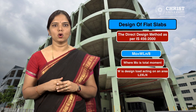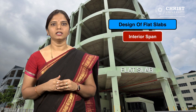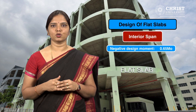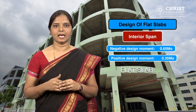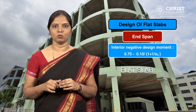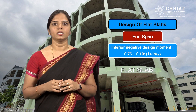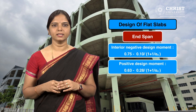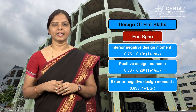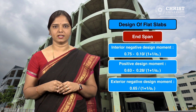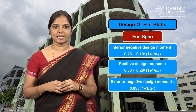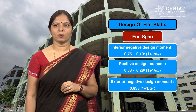Distribution of bending moment in positive and negative moments: in an interior span, the total design moment M0 is distributed as — negative design moment = 0.65 × M0, positive design moment = 0.35 × M0. In an end span, the total design moment is distributed as: interior negative design moment = 0.75 − 0.1 / (1 + 1/αC); positive design moment = 0.63 − 0.28 / (1 + 1/αC); exterior negative design moment = 0.65 / (1 + 1/αC), where αC is the ratio of flexural stiffness of the exterior columns to the flexural stiffness of the slab, given by αC = ΣKc / ΣKs.